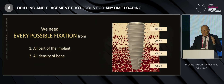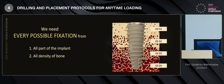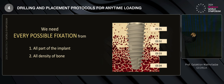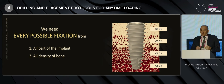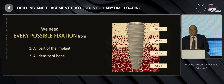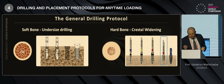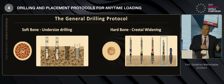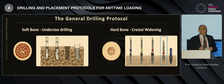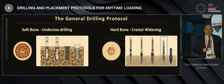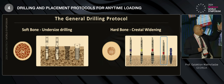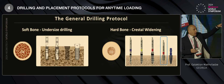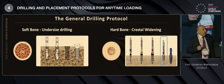We want fixation from all parts of the implant and from all densities of bone. Let's take a closer look at the general protocol. In the soft bone drilling protocol, we assess the bone density, then we make undersized drilling — one step less — which we call undersized. We place the implant by self-compaction and self-tapping.